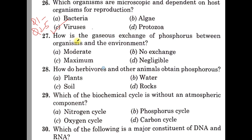Question 27. How is the gaseous exchange of phosphorus between organisms and environment? A: Moderate, B: No exchange, C: Maximum, D: Negligible. In the phosphorus cycle, phosphorus is never in the gaseous form. So the correct option here is B — there is no exchange.